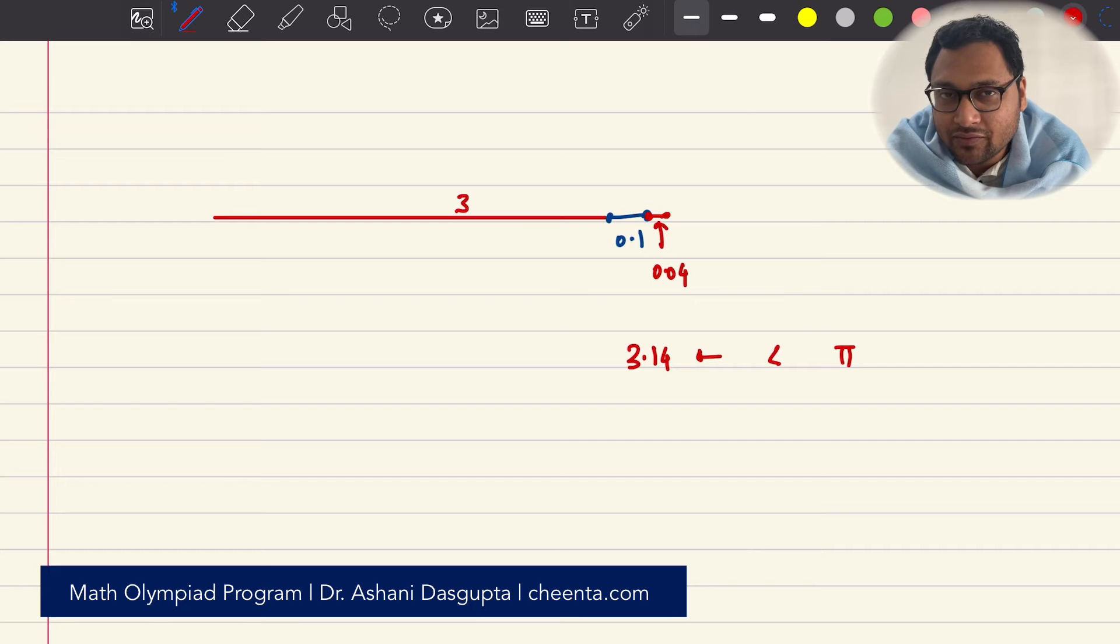Now, one of the fun games that mathematicians used to play at that time is that approximate as many digits of pi as you can. So this game went on for at least a thousand years. From Greece to India, many mathematicians did that. Hundreds of digits of pi were discovered. But none of them did what, around 700 years ago, what Madhava did.